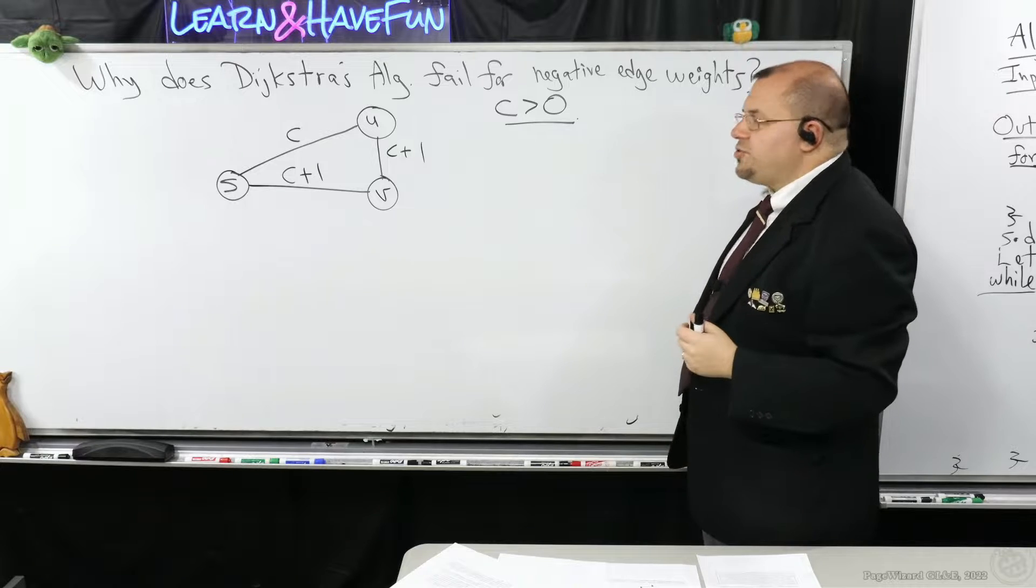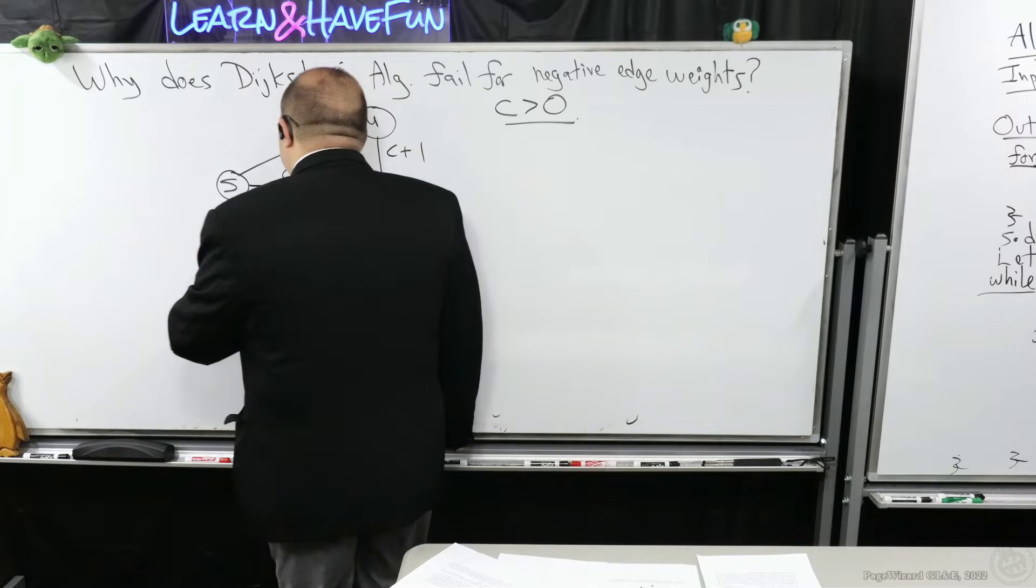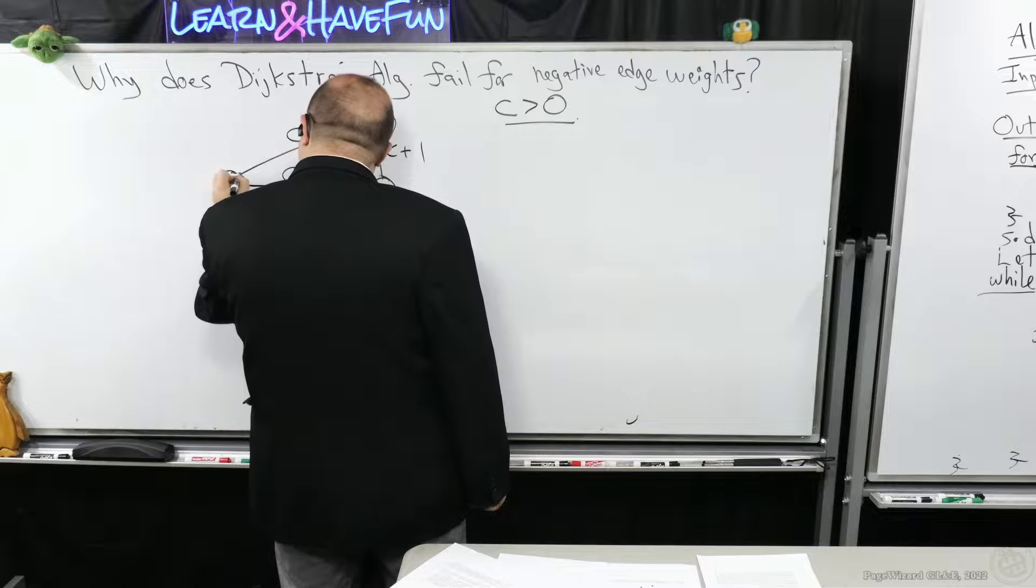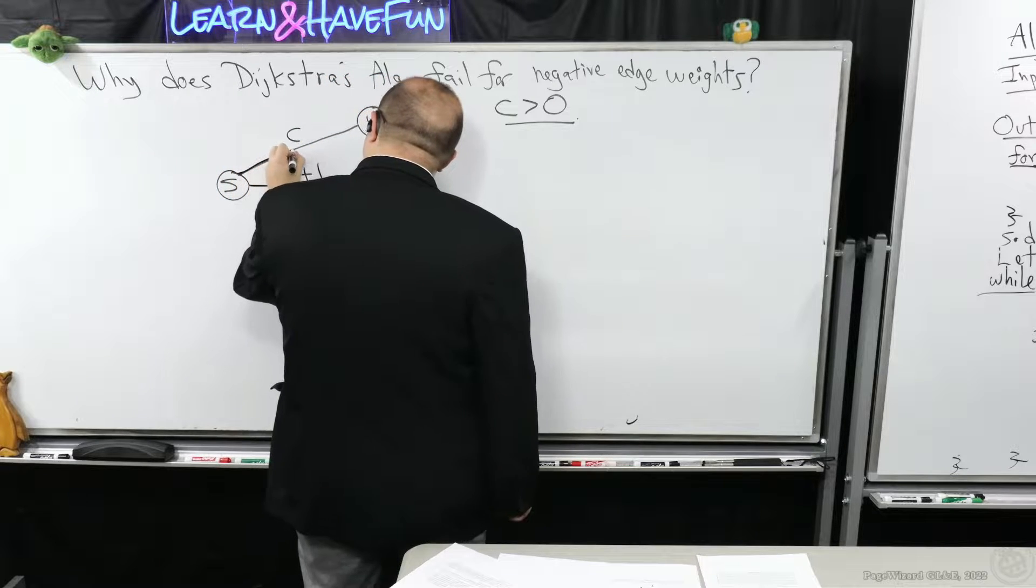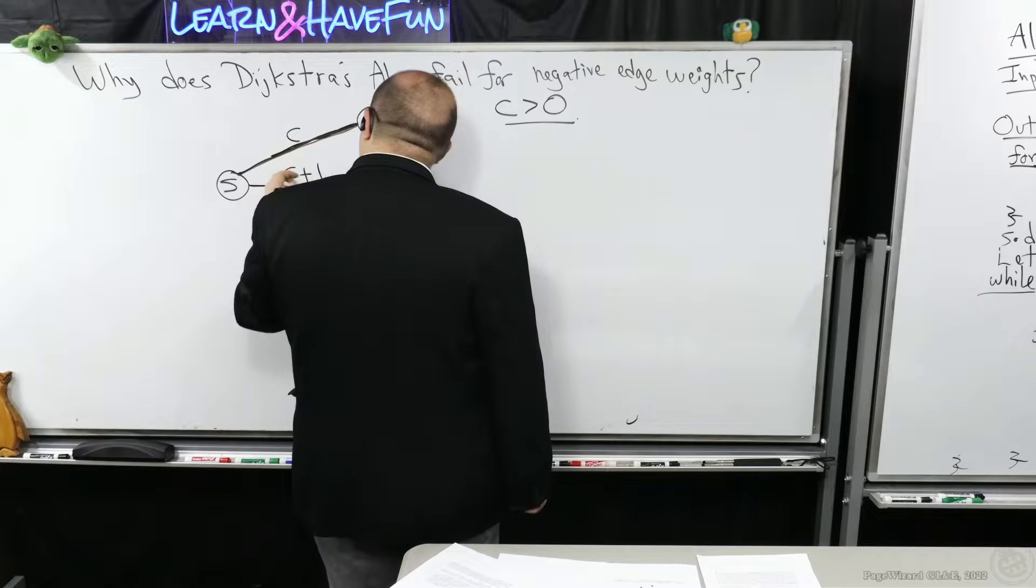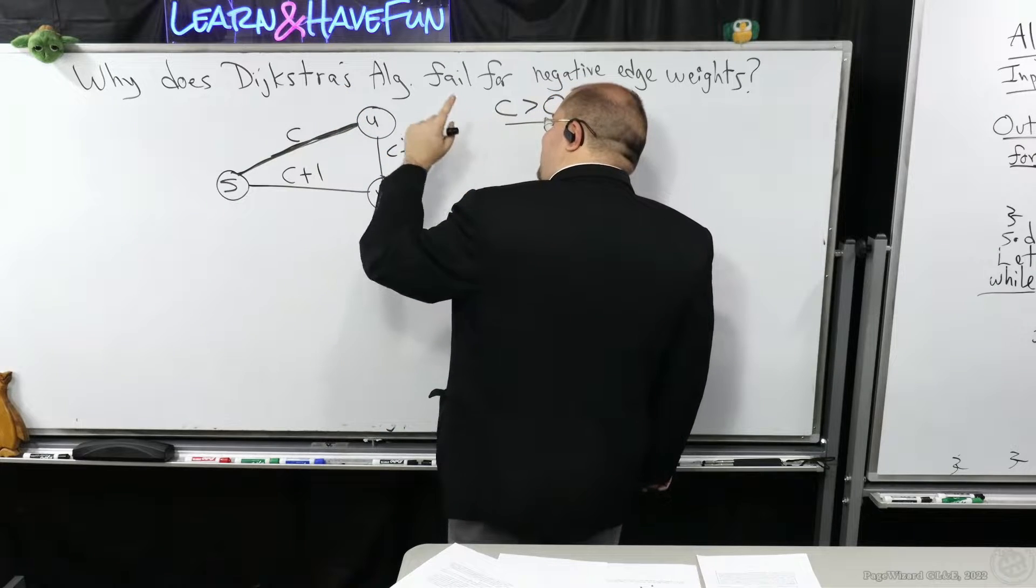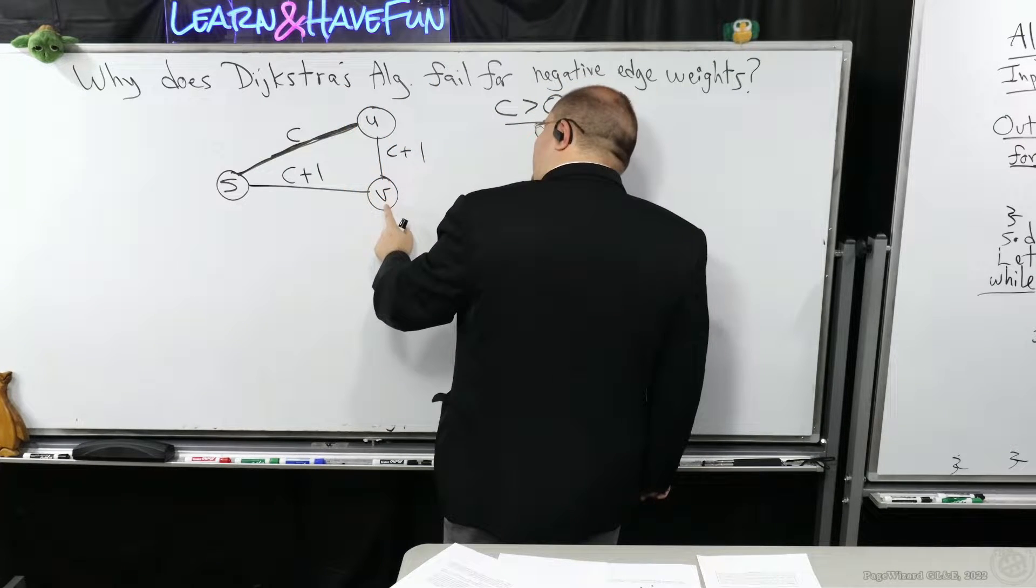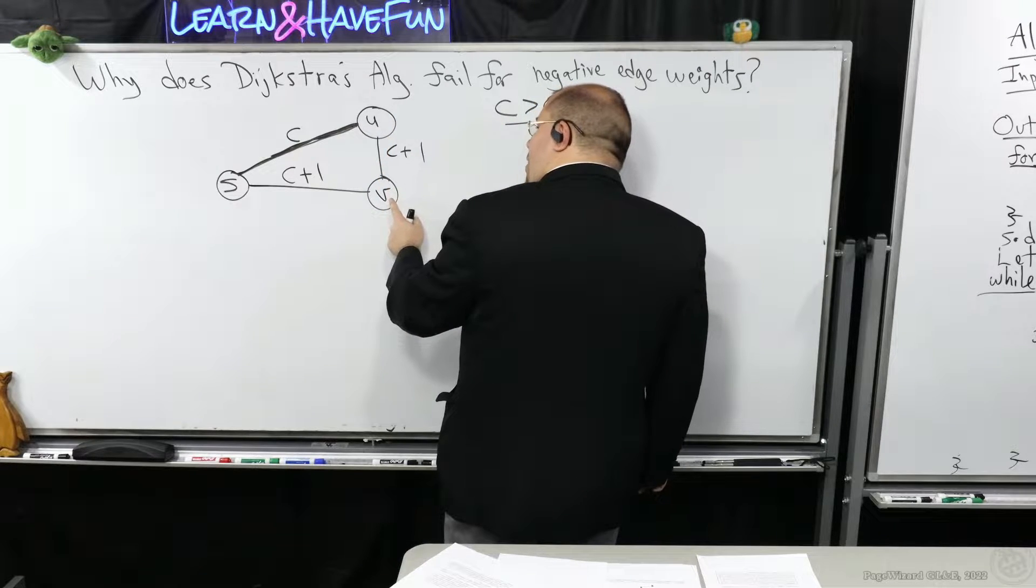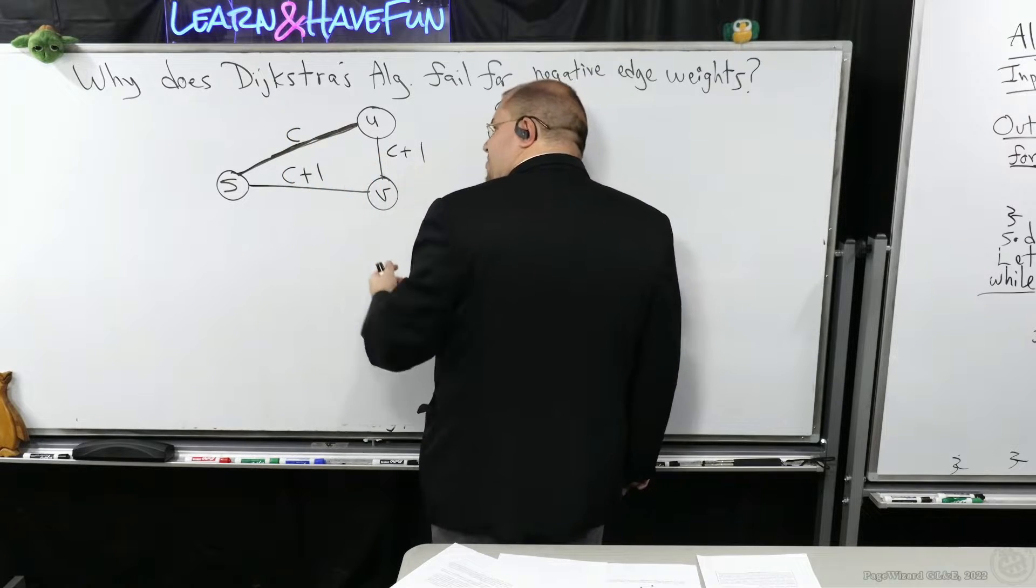So if you were to use Dijkstra's algorithm here, what would happen? Well, it would begin by picking this edge to extend for the shortest path tree, right? And the blob would consist of S and U. And then it'll update the distance from here to there potentially. Does it relax this edge? No, because it'd be C plus C plus 1, which is larger than C plus 1.